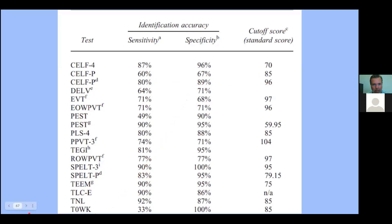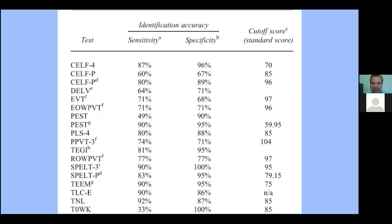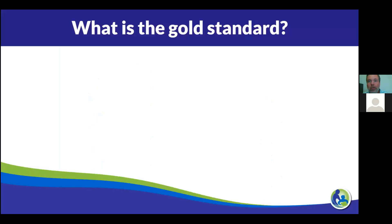So what's my point? First, these tests aren't giving as accurate information as we often think — those numbers aren't as precise as we often believe. Also, depending on who you're testing, the characteristics of the student, and the characteristics of the sample, performance is going to vary widely. You can even see variance across different tests. So we need to use some caution.